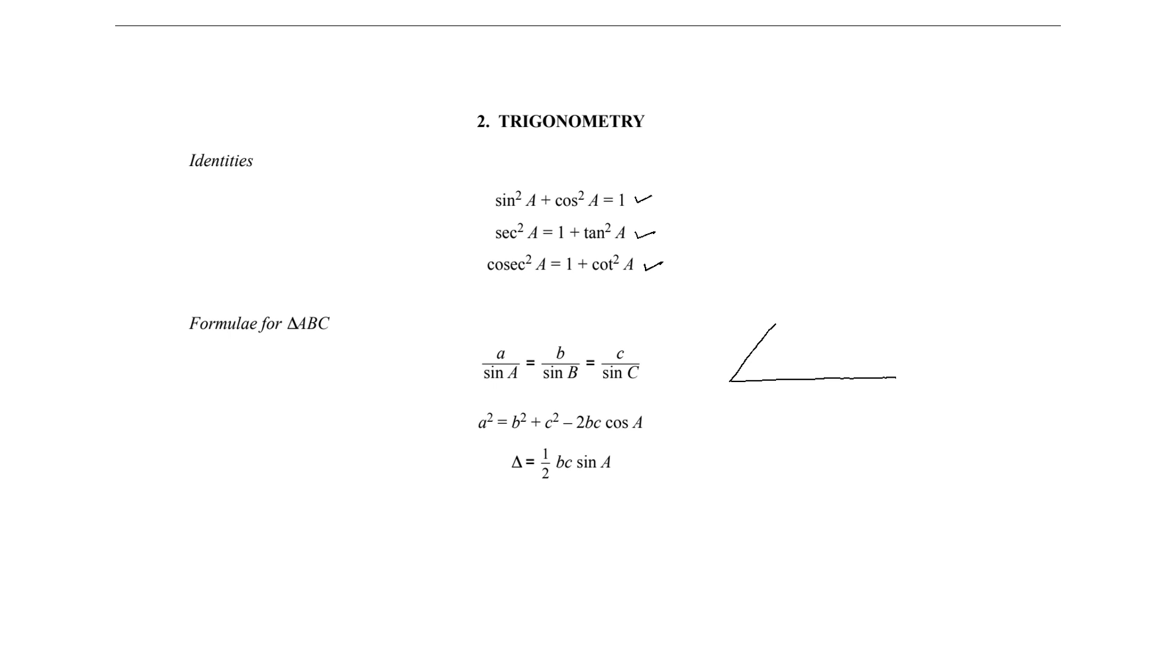Then we have three other formulas about a triangle ABC which is not a right-angle triangle. Let me draw a triangle. Now let's put the values A, B, C. Let's define the opposite BC—the length of BC as small a, the length of AC as small b, and the length of AB as small c.